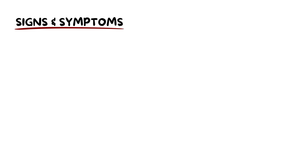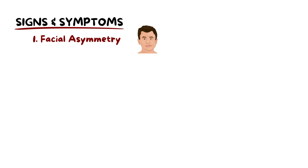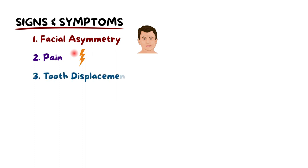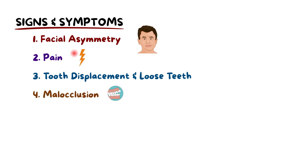Patients with fibrous dysplasia might exhibit noticeable facial asymmetry, with one side more pronounced due to bone swelling. This growth can lead to pain and may even displace teeth, sometimes resulting in them becoming loose. As the dysplastic bone reshapes, it can induce a malocclusion, where the alignment of the teeth is affected.